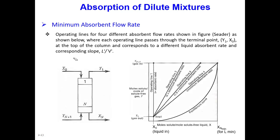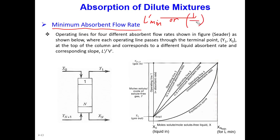In the design, we always have a minimum liquid flow rate — minimum absorbent or liquid flow rate — L prime minimum. Sometimes we also write it as L prime over V prime minimum. So what does it mean?